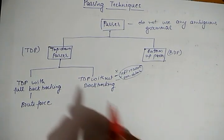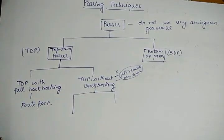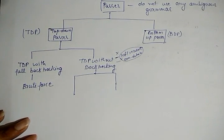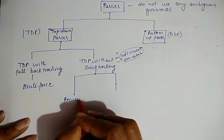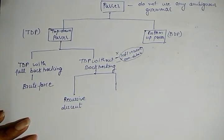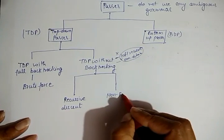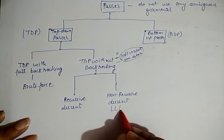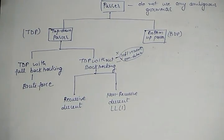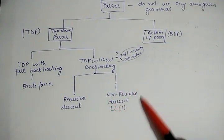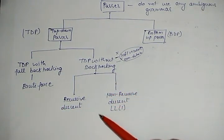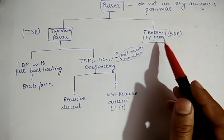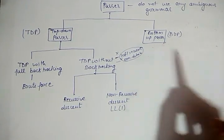TDP without backtracking can be further divided into two types: Recursive Descent Parser and Non-Recursive Descent Parser, in which we discuss a technique called the LL(1) parser. In some reference books, both recursive and non-recursive descent parsers fall under the category of predictive parsers.